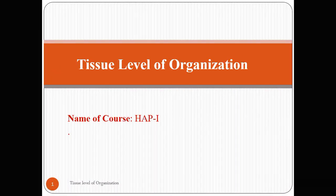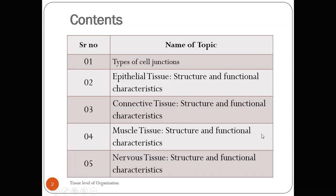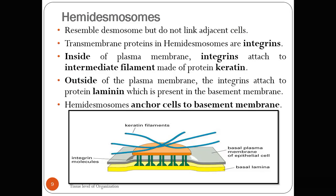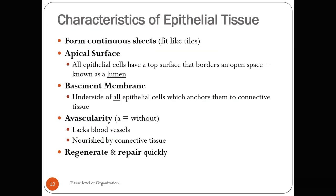Good morning everyone. Yesterday we started with the tissue level of organization, where we studied the epithelial tissue. We discussed cell junctions at the cellular level of organization and started with the epithelial tissue classification. We will study further points under epithelial tissue in this lecture. These characteristics of epithelial tissue are very important and you have to remember them.